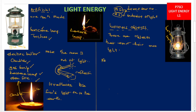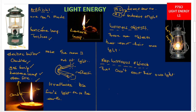The opposite of luminous is non-luminous. Non-luminous objects are objects that cannot emit their own light. Instead, they get their light from another source and then send it out. We also call them indirect sources of light.